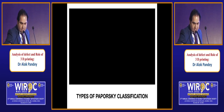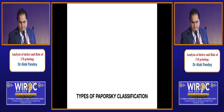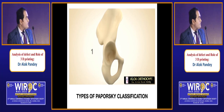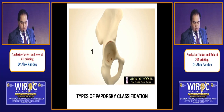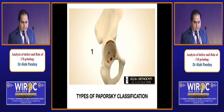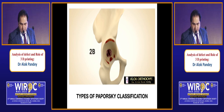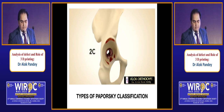The types of the Paprosky classification: Type 1 is a focal contained defect where both columns are intact. In Type 2, the center of migration is less than 3 cm and both columns are intact. Type 2 has subtypes A, B, and C.